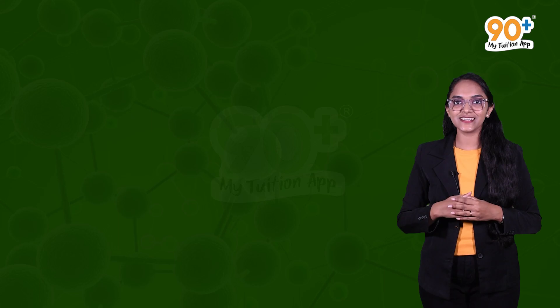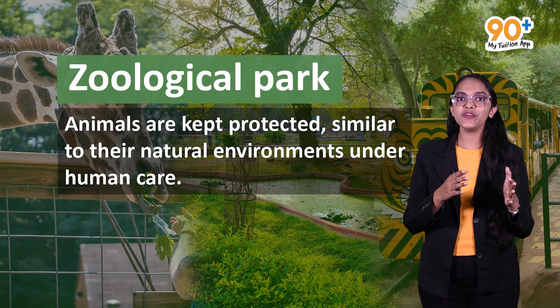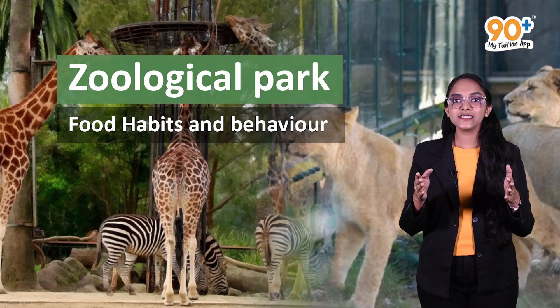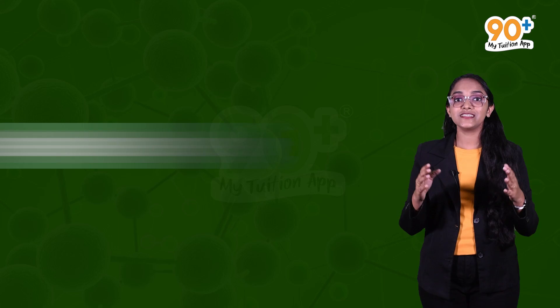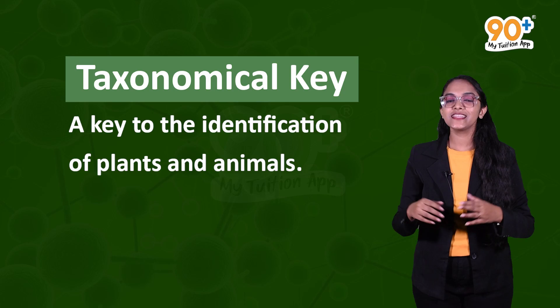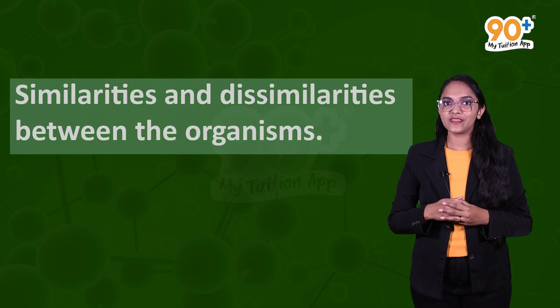The next taxonomical aid is the zoological park — one of your favorite places. It is where animals are protected and kept under human care in an environment similar to their natural habitat. We can also study their food habits and behavior. The next taxonomical aid is taxonomical keys — the key to identification of plants and animals, based on similarities and dissimilarities between organisms.